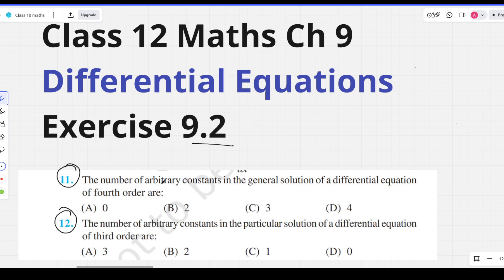Our question is the number of arbitrary constants in the general solution of differential equation of 3rd and 4th order. So, arbitrary constants in our general solution is how many?